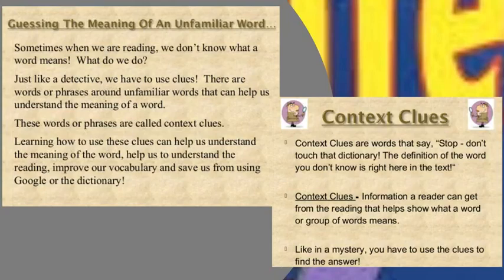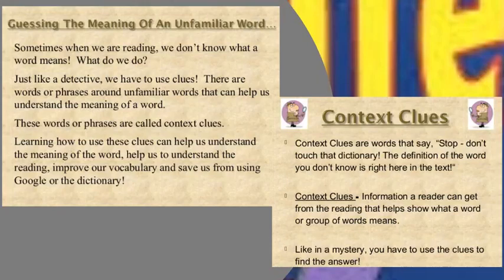Context clues are words that say stop, don't touch that dictionary. The definition of the word you don't know is right here in the text. Context clues are clues, hints, or information a reader can get from reading that helps show what a word or group of words mean. Just like a mystery, you use the clues to find the answer.